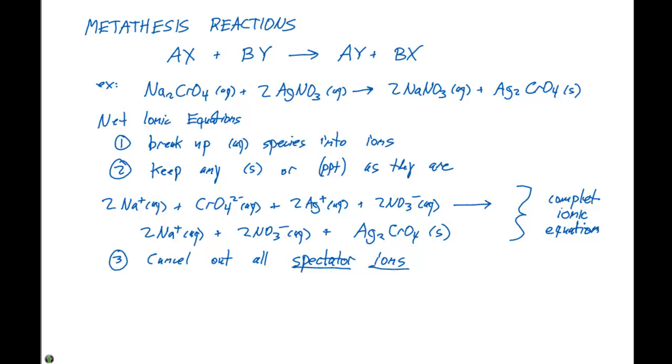What a net ionic equation is gonna do is it's only gonna indicate the ions and precipitates that are involved in the chemical reaction. So we can list these and cancel out what we call spectator ions.